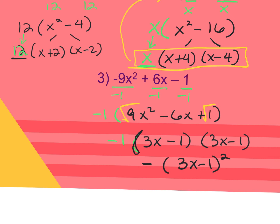Whenever you are factoring a perfect square trinomial, the answer is always going to be a binomial squared.